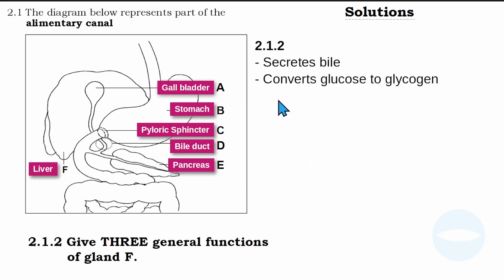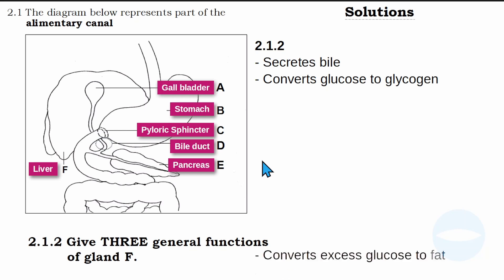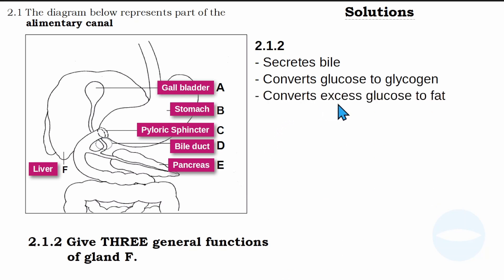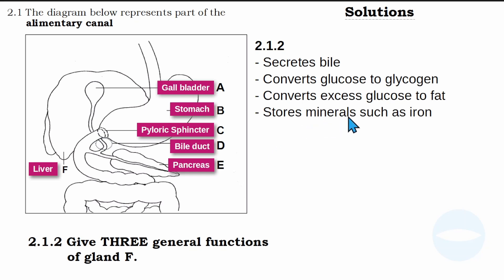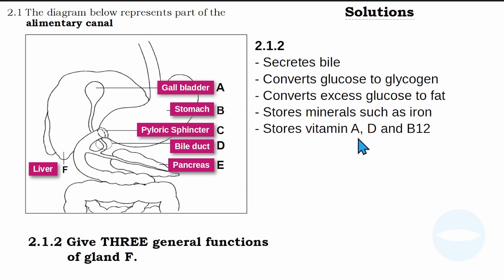Another function of the liver: it converts glucose to glycogen, and it is stored as glycogen. Another function: it stores minerals such as iron. And then another function: it stores vitamin A, vitamin D, and vitamin B12. These vitamins are stored in the liver.